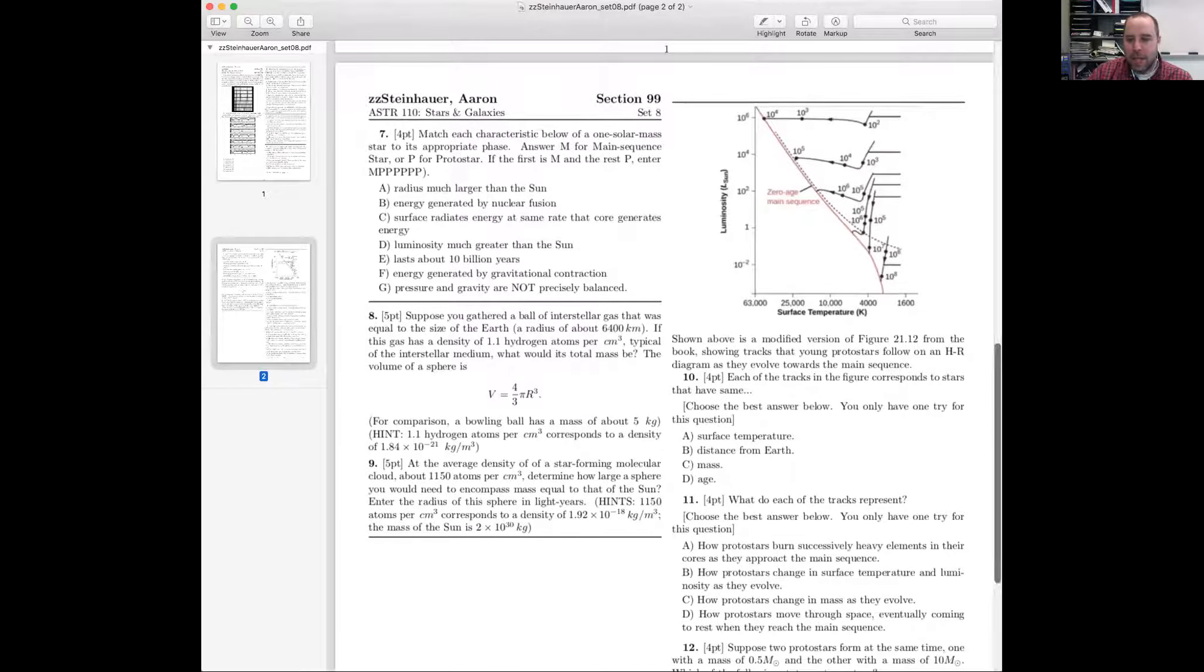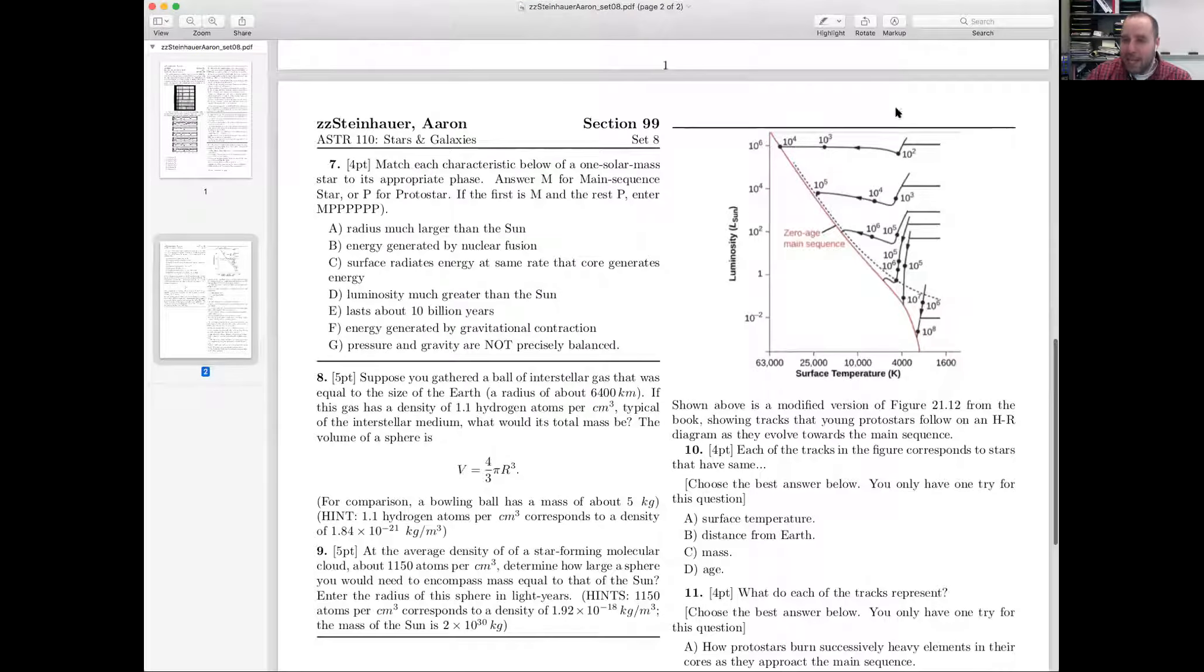So here's 10 and 11. We're looking at this plot of, I showed a plot like this in one of the video sessions. These are pre-main sequence tracks, which means that they're showing the motion on the HR diagram, meaning how the surface temperature and luminosity are changing over time for newly formed stars before they reach the main sequence.